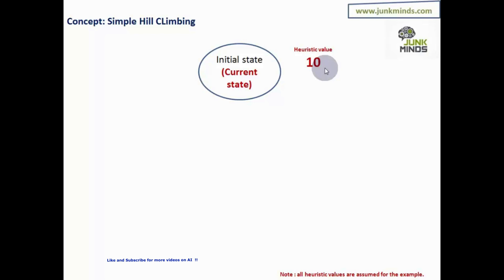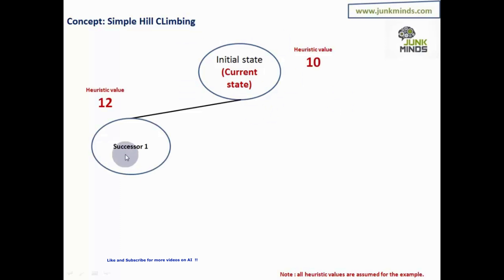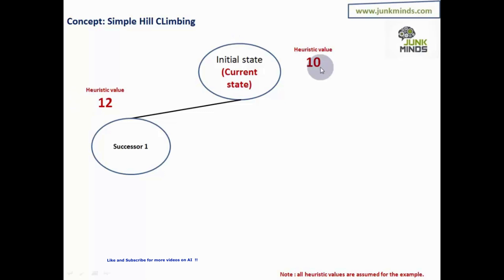How does simple hill climbing work? Of all the rules applicable on the current state, I apply a rule and get a new state called the successor. I calculate its heuristic value and compare it with the current state's value. If the successor's value is worse — remember, smaller heuristic value means a better state — then I retain the current state and continue evaluating it.